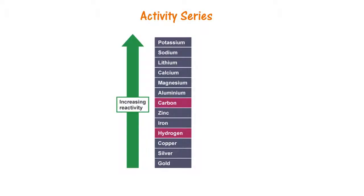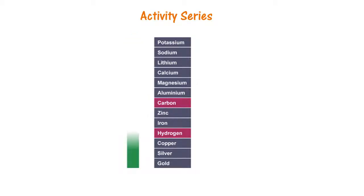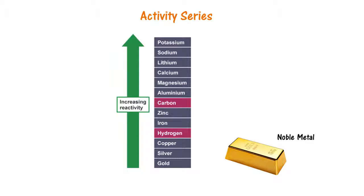We will try and simplify the activity series in this video. The activity series has elements arranged according to their reactivity. In this list, gold is the least reactive. We know it does not corrode. It is a noble metal. Potassium at the top of the list is highly reactive. It reacts vigorously with water, liberating heat.